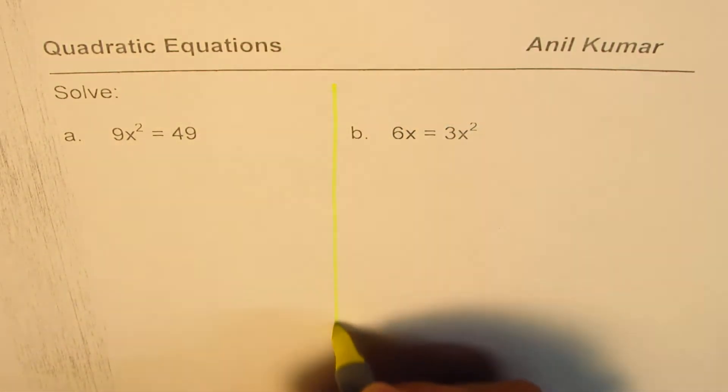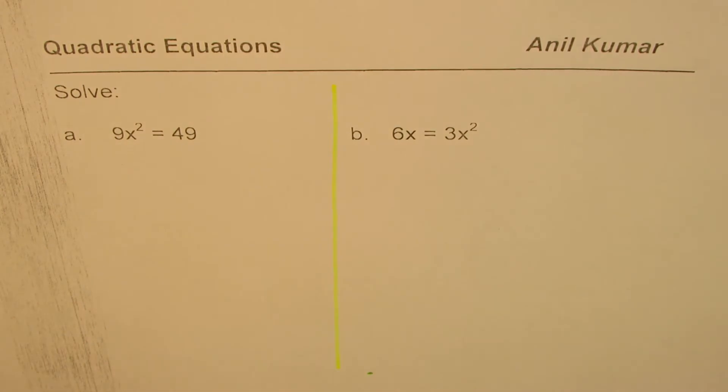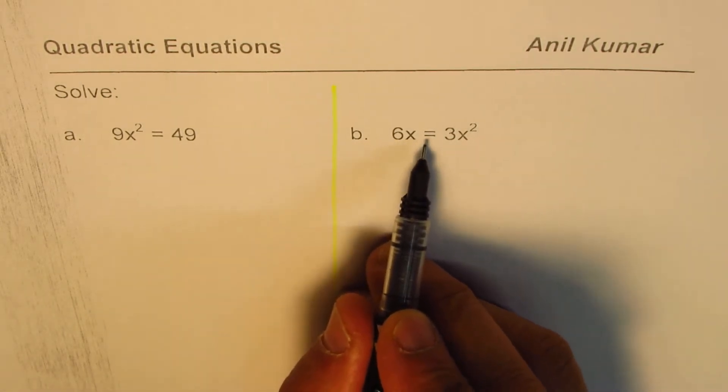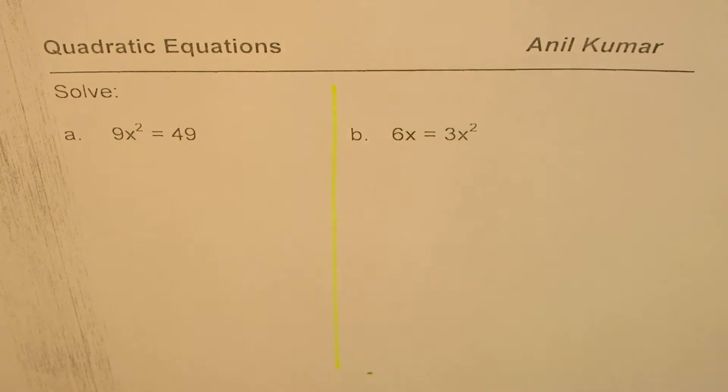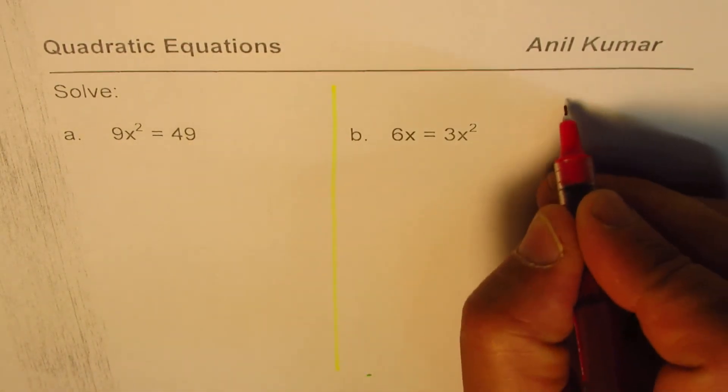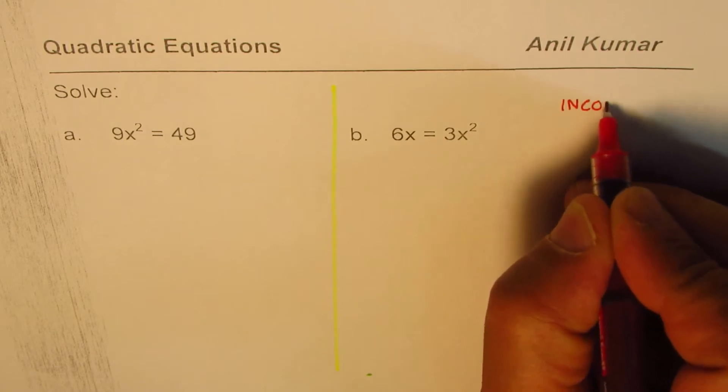You can always pause the video, answer the question and then look into my suggestions. Let me begin with part B which is 6x equals to 3x squared. Some of the students may provide a solution which may look like this. Let me first tell you that is an incorrect solution.